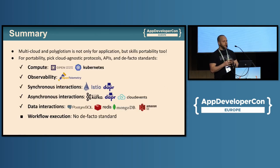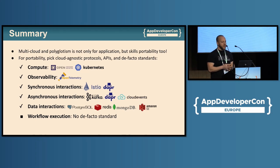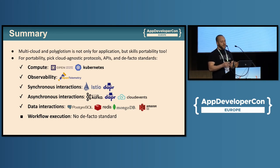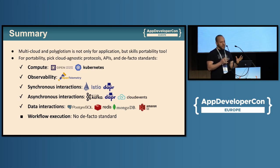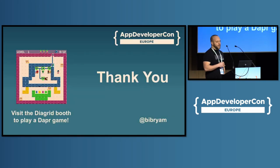To sum up, if you want portability, you should pick a cloud agnostic protocol or API that is a de facto standard. Containers, Kubernetes, and OpenTelemetry are great examples. In other areas, projects such as DAPR, Kafka, CloudEvents, Postgres, and others are becoming de facto standards. There is not yet a good option for a workflow engine that is a standard today. And relating to that, it's not only portability of an application — it's also portability of your skills, which you can carry with you when you change languages or change teams. That's all, thank you.